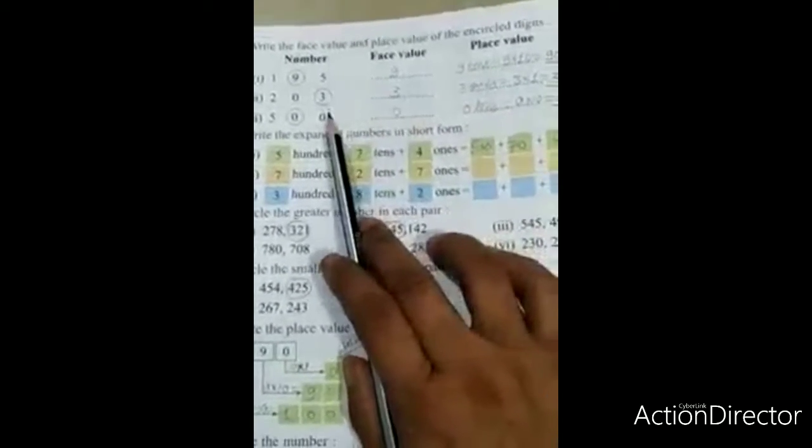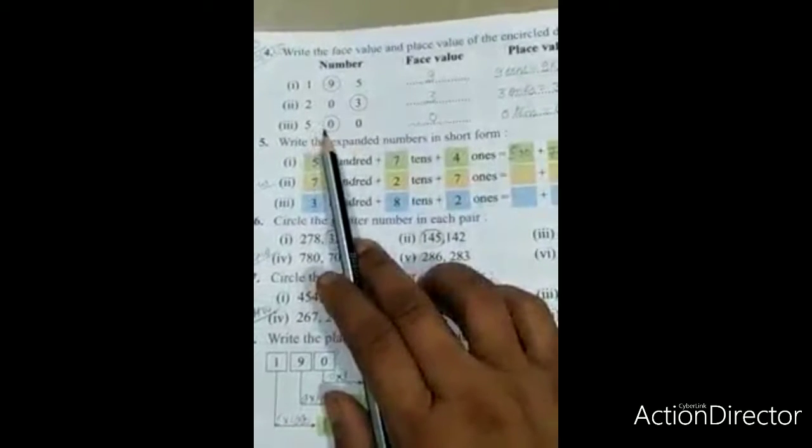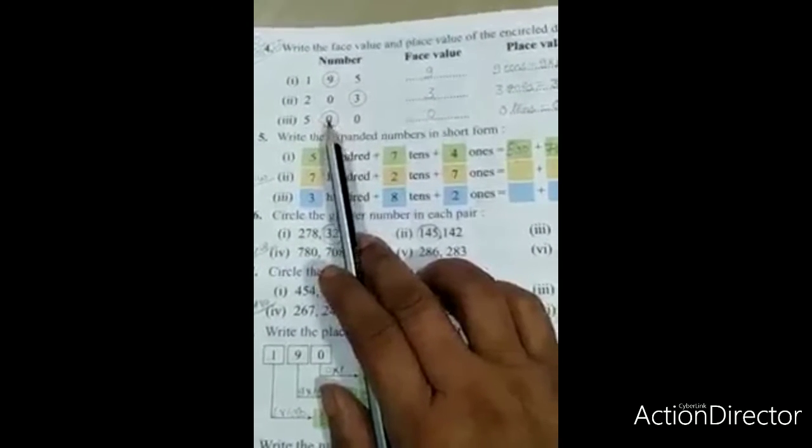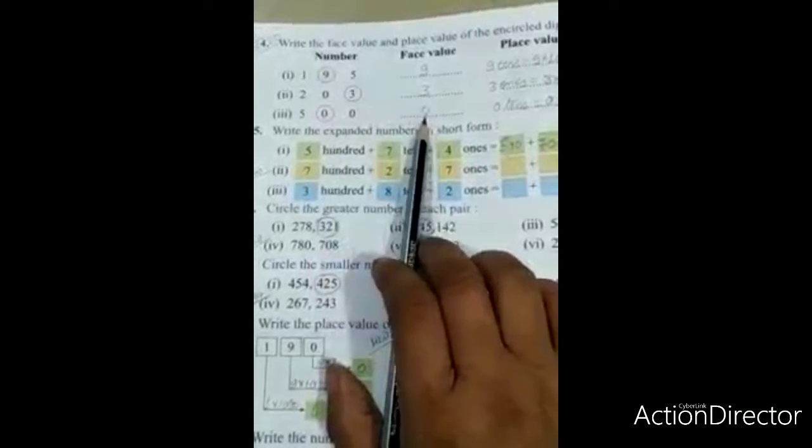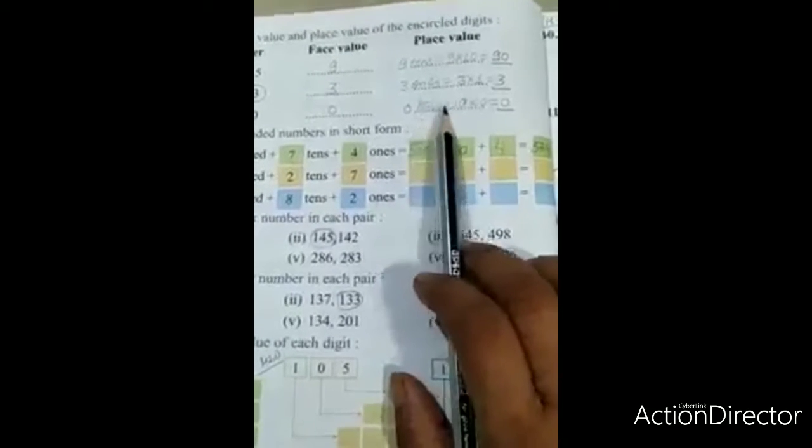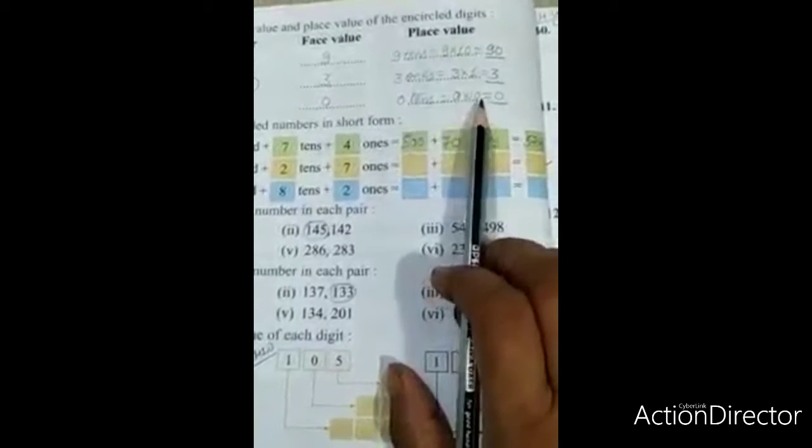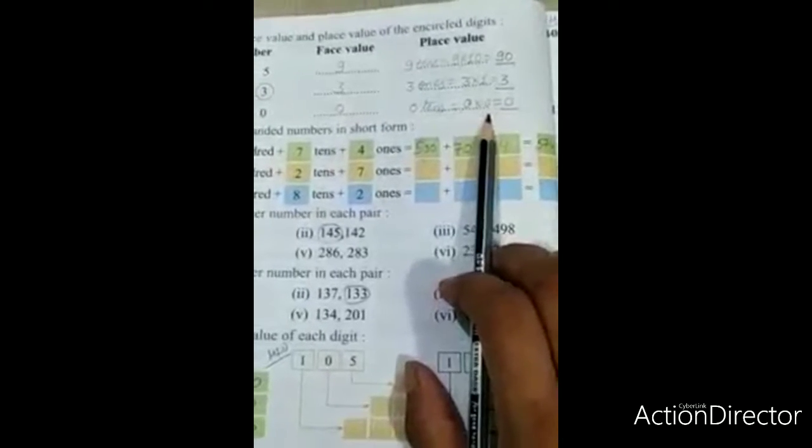Five hundred. In the tens place is zero. Zero is in the tens place. Zero multiplied by ten is zero. When zero is multiplied by any digit, the answer is zero.